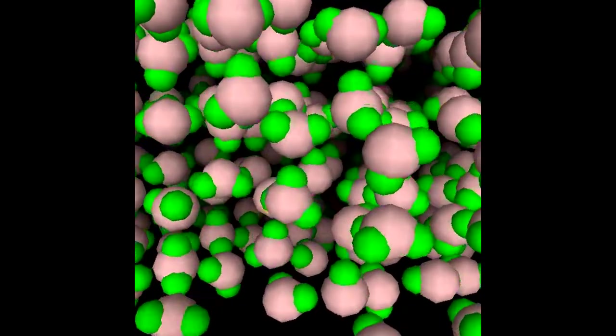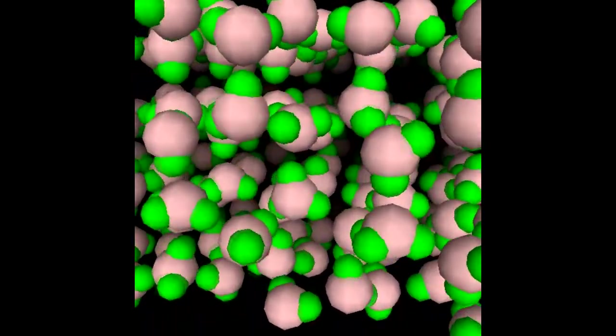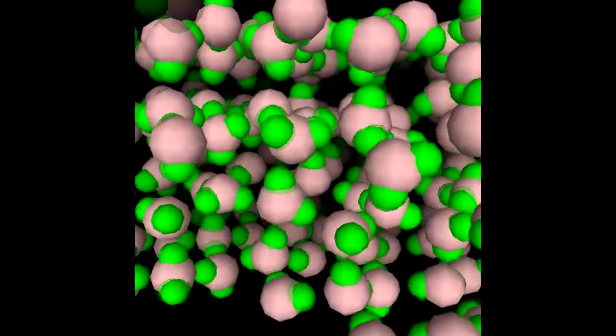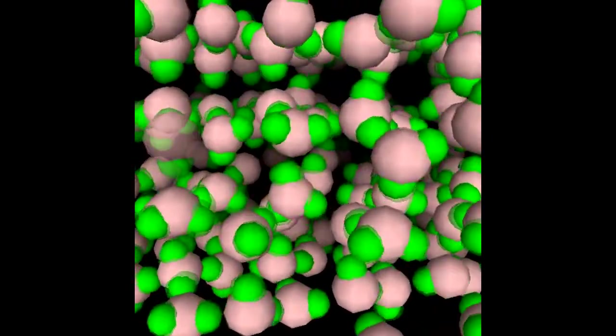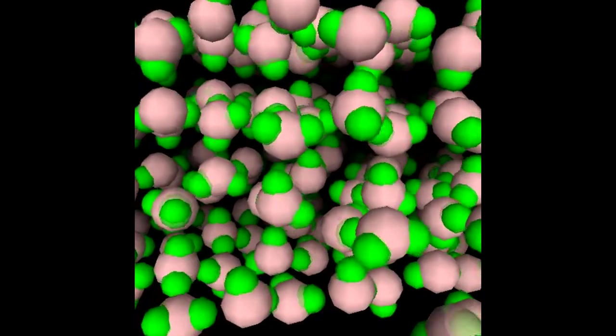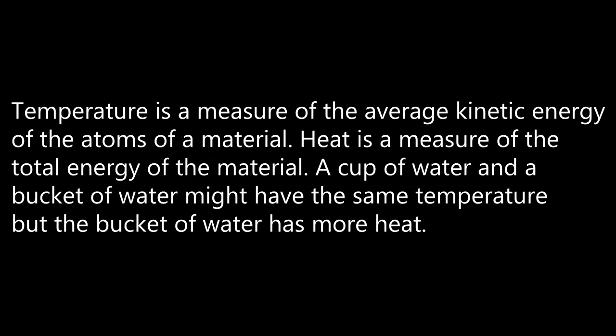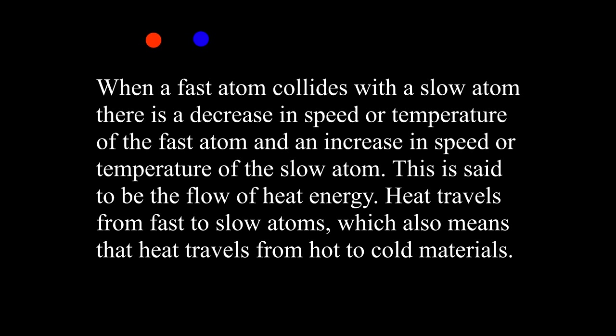Heat energy is the thermal motion of the atoms and molecules which comprise the material. The greater the number of atoms in motion, the greater the total heat energy. Faster atoms have more kinetic energy, which also means that they have a higher temperature, through the Boltzmann conversion factor between kinetic energy and temperature, which was one half mv squared equals three half kT. Temperature is a measure of the average kinetic energy of the atoms of a material. Heat is a measure of the total energy of the material. A cup of water and a bucket of water might have the same temperature, but the bucket of water has more heat. When a fast atom collides with a slow atom, there is a decrease in speed or temperature of the fast atom, and an increase in speed or temperature of the slow atom. This is said to be the flow of heat energy. Heat travels from fast to slow atoms, which also means that heat travels from hot to cold materials.